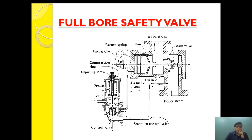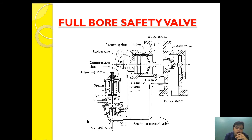Now let's see the design of the full bore safety valve. As you can see, this is the boiler steam which escapes through the valve passage. There are two valves: one is the main valve and the second is the control valve. The steam pressure is acting both on the main valve and through a steam control line it is also acting on the control valve.